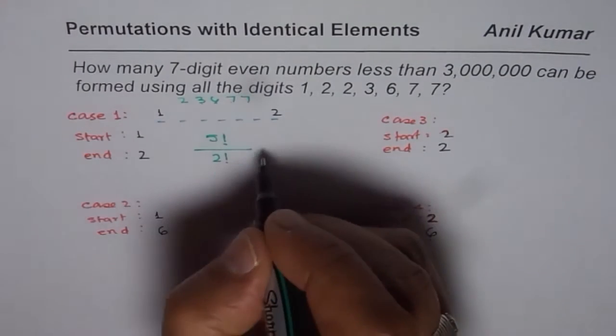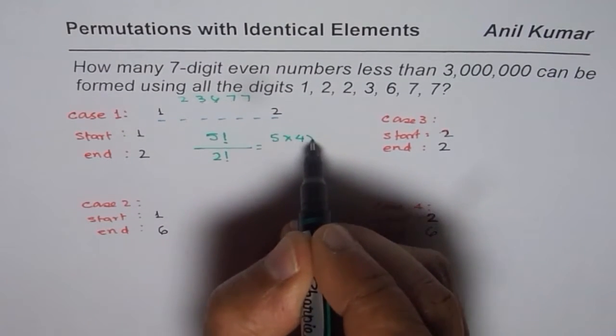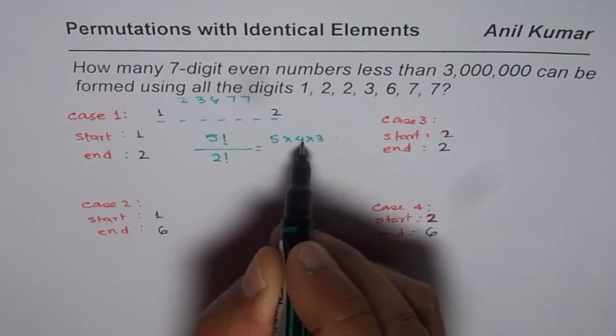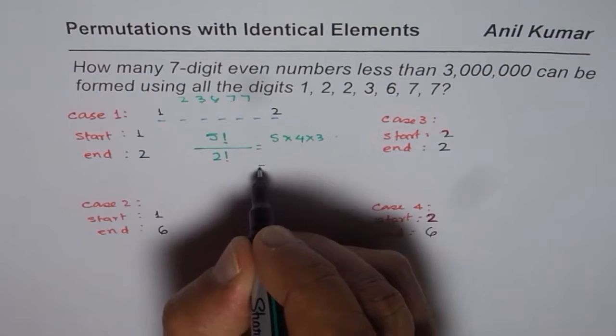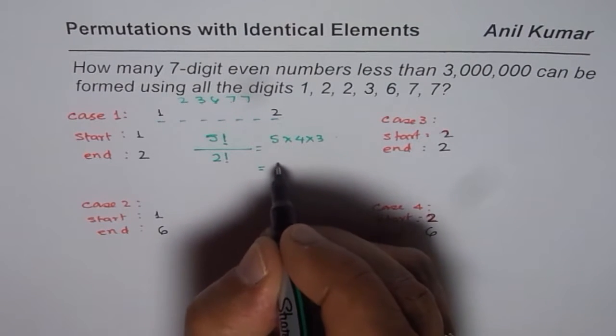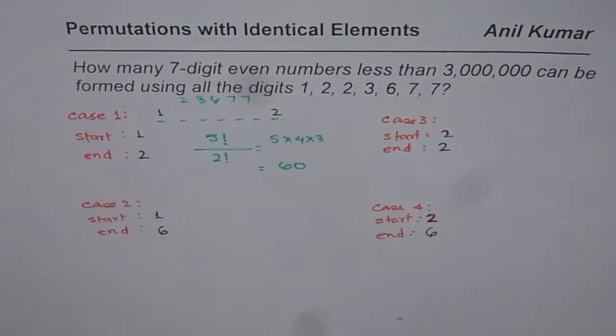Now 5 factorial is 5 times 4 times 3 times 2 factorial. That will cancel off. So we are left with 5 times 4 times 3, and that is equal to 20 times 3 which is 60. So that is what we get in this particular case.